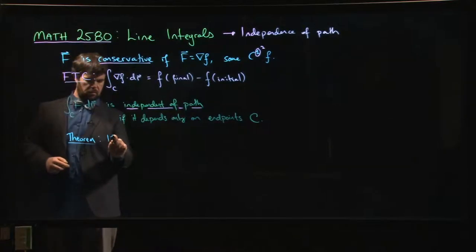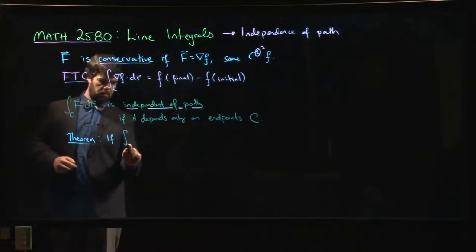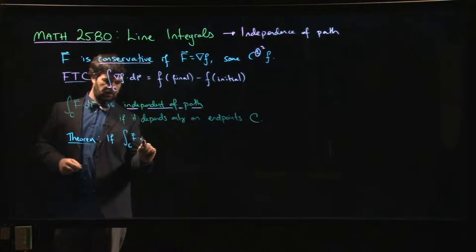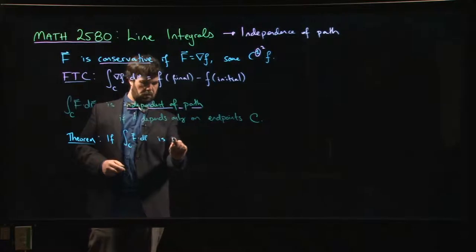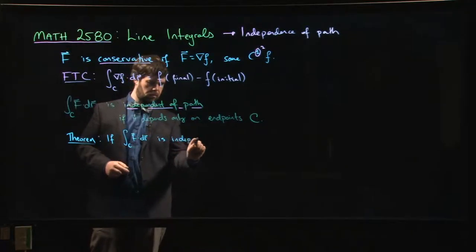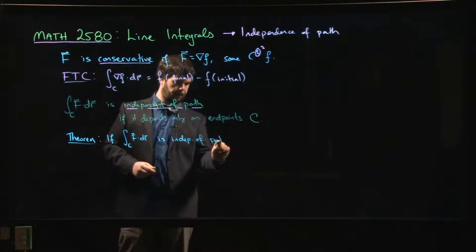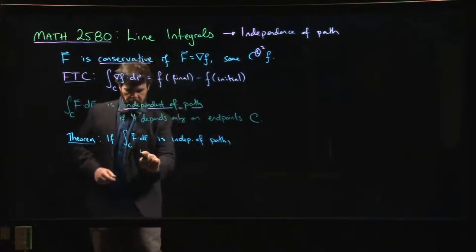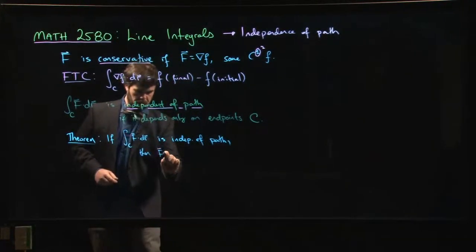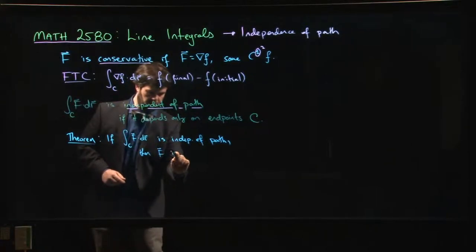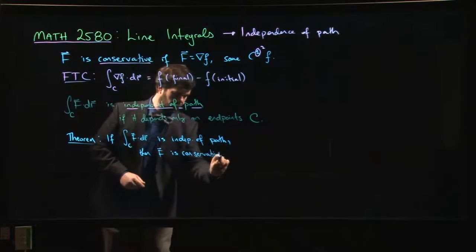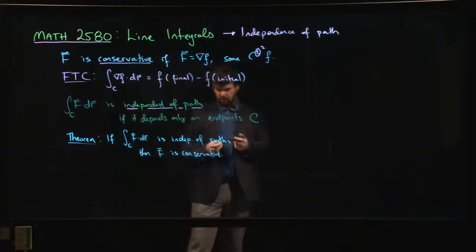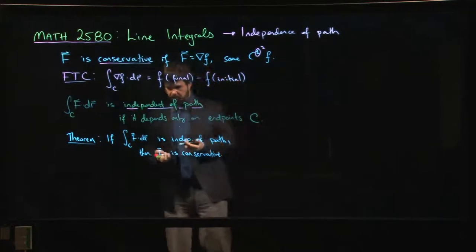This is a two-way street. Another theorem says that if the integral along C of F·dr is independent of path, then the vector field F must be conservative. There are some conditions here — we need to say a little bit about domains.